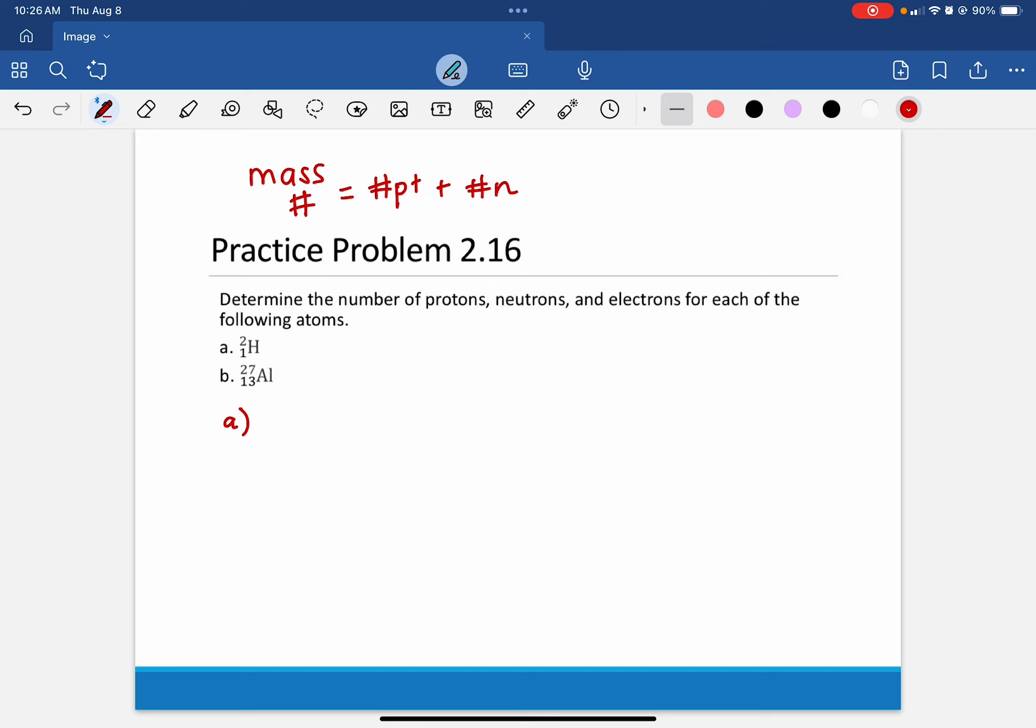Letter A. We want to know the number of protons, neutrons, and electrons. First thing is first, we already know the number of protons here. That's one. It's our atomic number, so one proton.